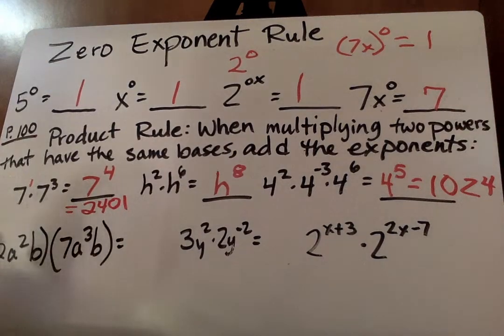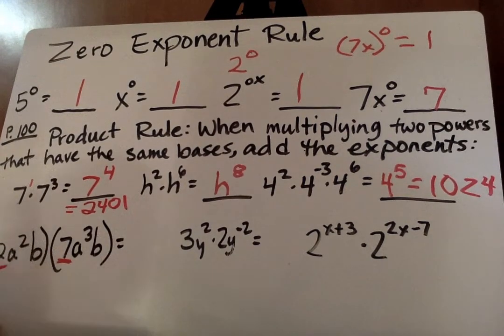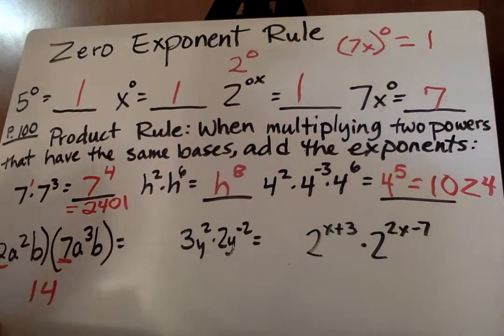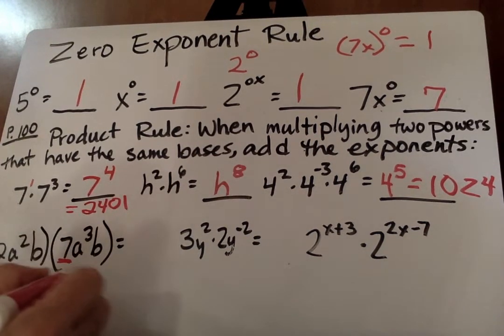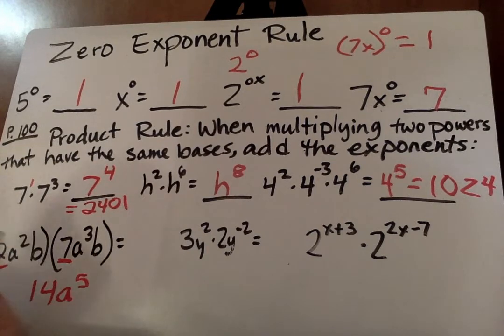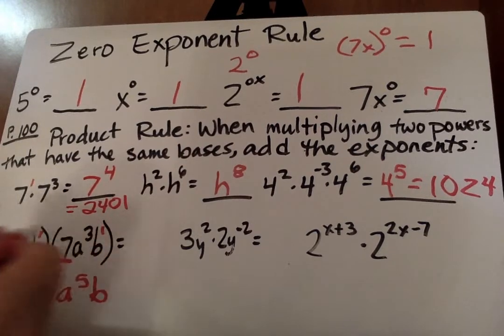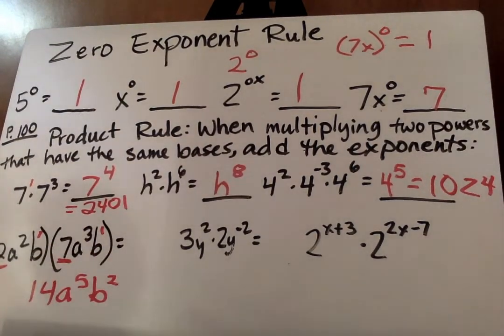Next, we go ahead and we do this. When you have numbers in front, this is another example, 2 times 7, we just treat that normally as 14. Then we say a squared times a to the third. We're going to add the exponents, a to the fifth. Then we say b times b. Remember, there's imaginary ones there, 1 plus 1, b squared. And there you have that answer.